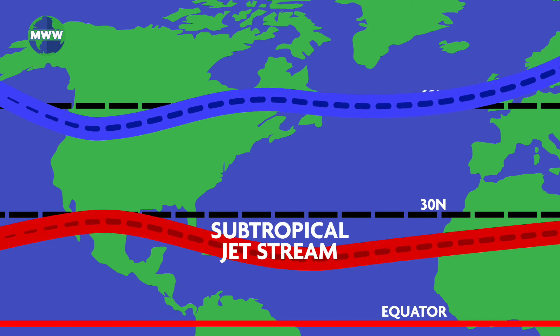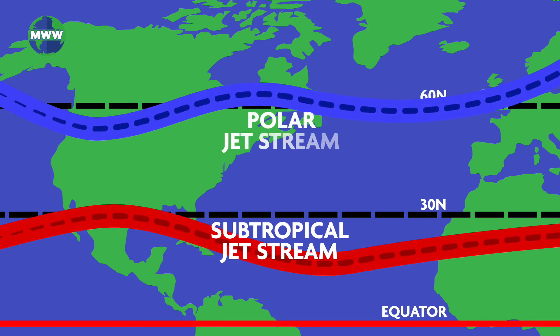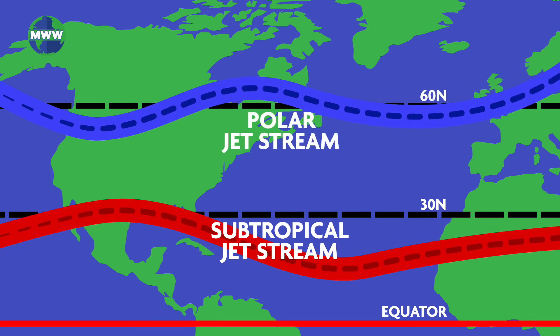At 30 degrees north or south is the subtropical jet stream. At 50 to 60 degrees north or south, you'll find the Polar Jet Stream.